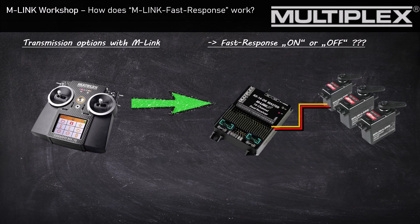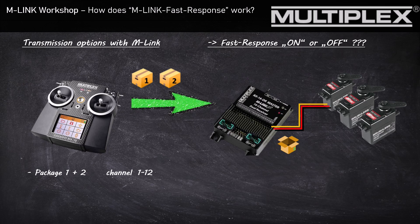That means it has an influence on the whole flight feeling of your aircraft. To understand how the communication between the MLink transmitter and the receiver works, we will look at it on a really high level. The MLink transmitter sends data packages to the receiver, which the receiver converts into serial signals for the servos. Data packages 1 and 2 are responsible for the first 12 channels.